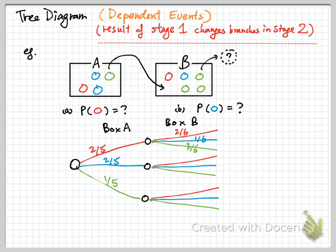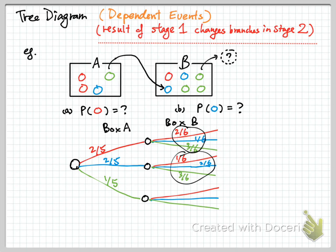On the other hand, if the blue one goes into box B — suppose we pick the blue one — the probability is no longer the same. It is not 2 over 6 anymore for the red; it becomes just 1 over 6. And that is 2 over 6 for the blue, and 3 over 6 for the green. You can check the integrity of the tree diagram by making sure that the probabilities of all branches add up to 1.